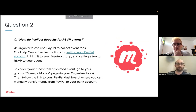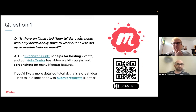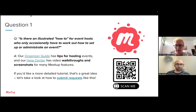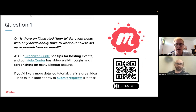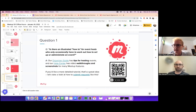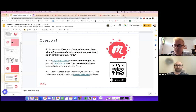One quick thing about question one and the event scheduler: we do have the organizer guide accessible with all of the articles, topics, and categories on how to be a successful organizer, and there's a quick link right in the event scheduler on the right-hand side. So when you go to create an event, you'll just see a hyperlink right out to the guide, plus a couple of tips on the right-hand side as well.